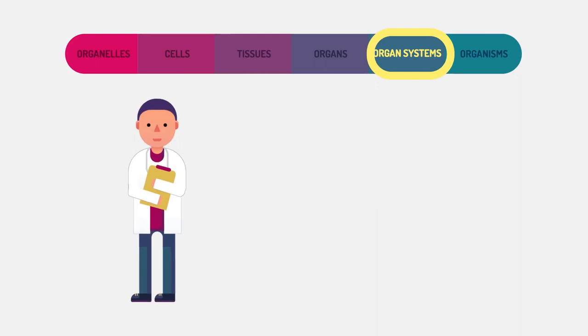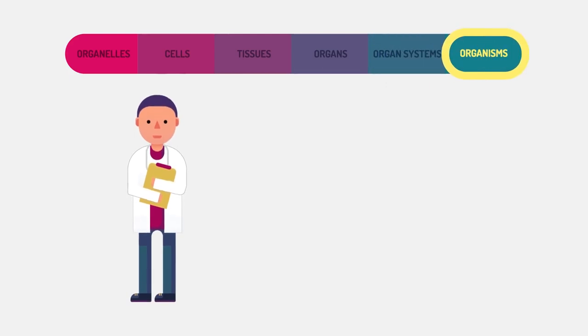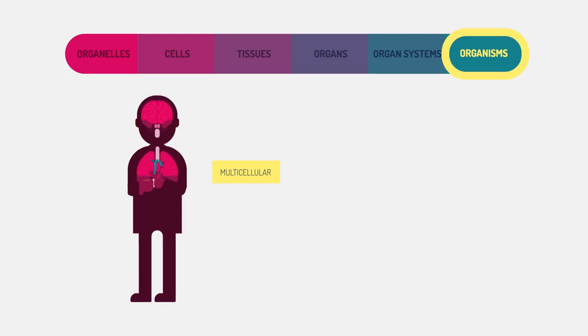Organisms are entire living things that can carry out all basic life processes. Multicellular organisms are made up of organ systems, but unicellular organisms such as bacteria or protists are made up of one cell. So there are the levels of organization in multicellular organisms.